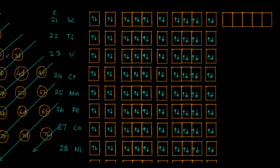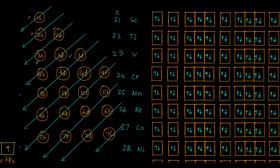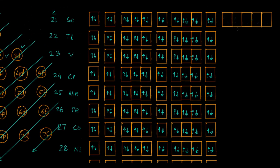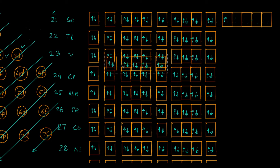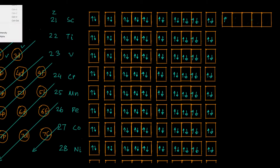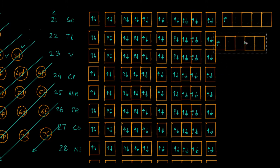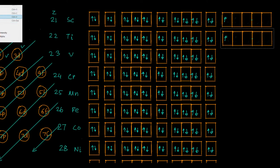We have finished filling calcium. The next element is scandium. After calcium was filled in the 4s orbital, we now have 3d which has five orbitals. So the first electron of scandium goes into the first 3d orbital. We copy this and paste it for the remaining d orbitals.